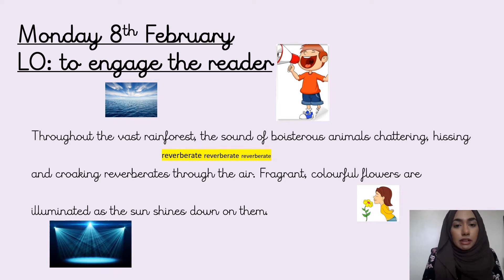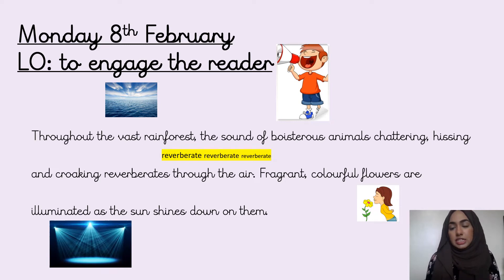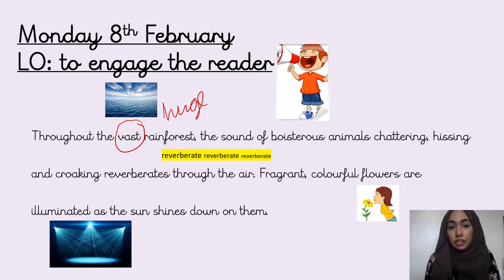Throughout the vast rainforest, the sound of boisterous animals chattering, hissing and croaking reverberates through the air. Fragrant colourful flowers are illuminated as the sun shines down on them. I've added in some pictures to help understand the meaning of some of these words. The word vast just means huge — there's a picture of an ocean because oceans tend to be very huge, so we know the rainforest is huge. Vast is a better word for it.